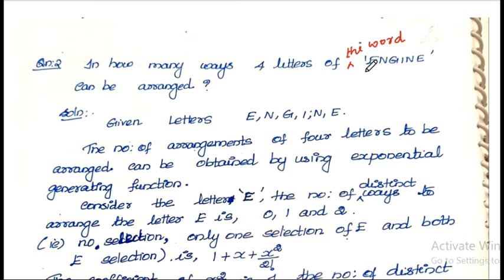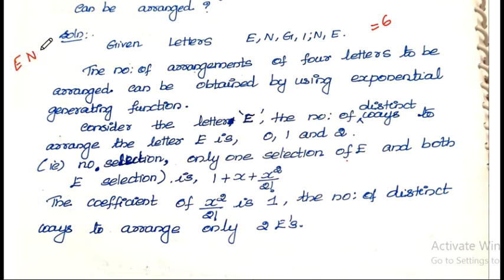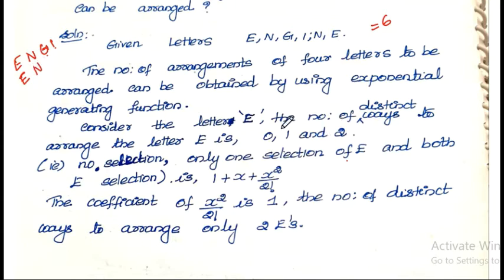The given word is ENGINE. The total number of letters is equal to 6. We have to arrange four letters of the word ENGINE. We use the exponential generating function. In this case, the first letter is E, then N, the distinguished letter G, then I. We have repetition: E occurs two times, N occurs two times, and G and I occur only one time. Then we find the number of ways to arrange the letters.